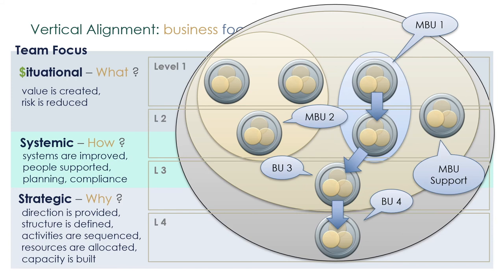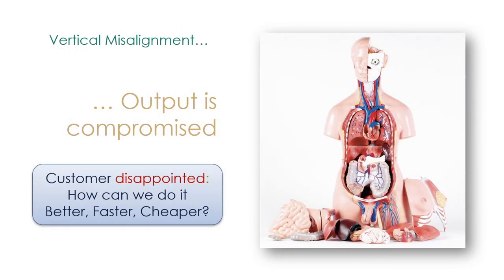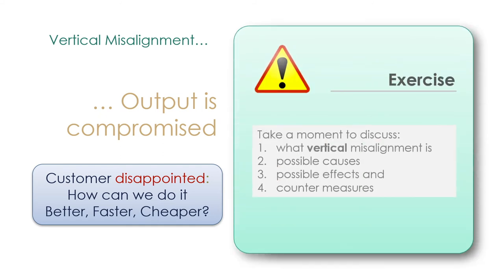All MBUs are physically linked: the leader of one MBU is a member of the next level's MBU. The team leader of the level 1 MBU is a member of the level 2 MBU. The manager who leads MBU 2 is a member of BU3. And the senior manager of BU3 is a member of BU4. This link ensures effective and quick communication, providing good escalation and feedback — this is vertical alignment, with every MBU performing a specific role to achieve the overall business objectives. When vertical misalignment occurs, the output is compromised and the customer is disappointed. Take a moment in small groups to discuss vertical misalignment, its possible causes, effects, and countermeasures.